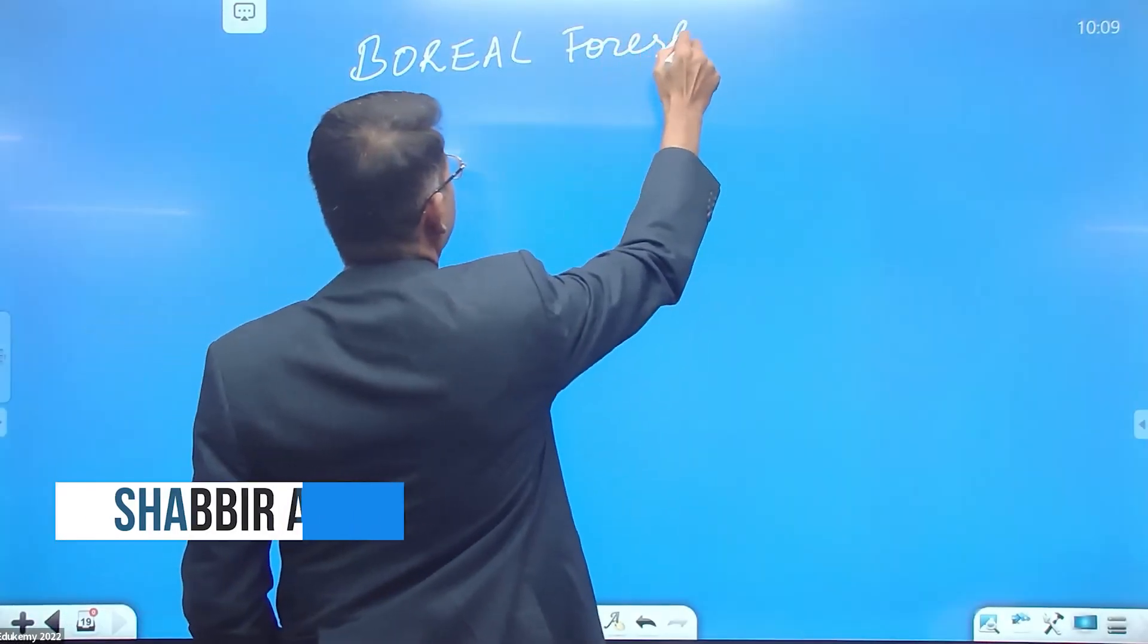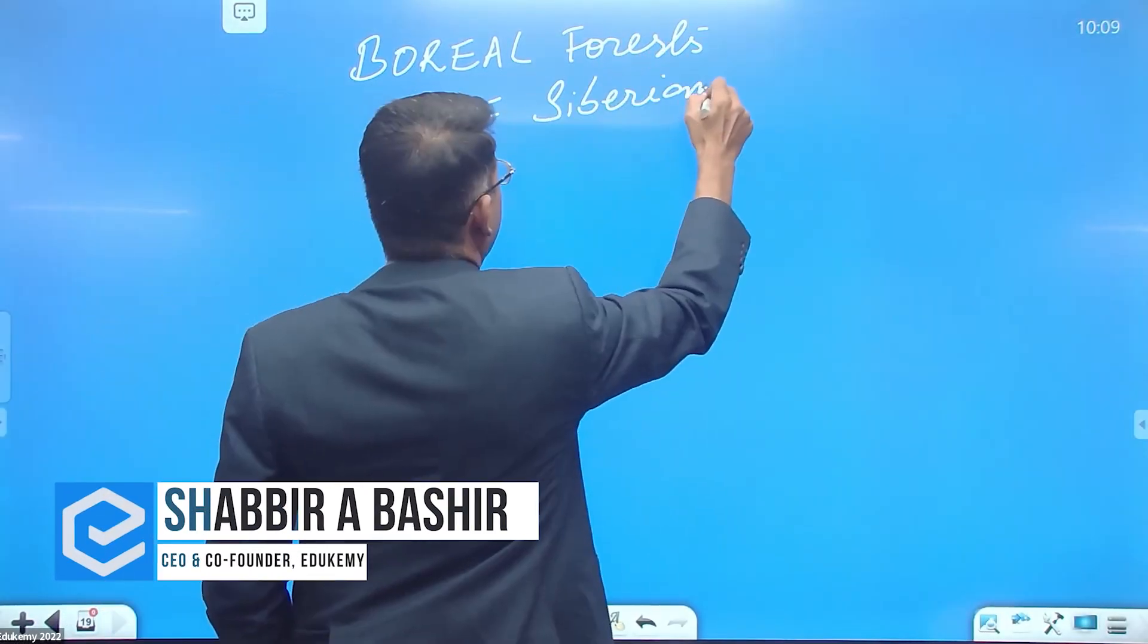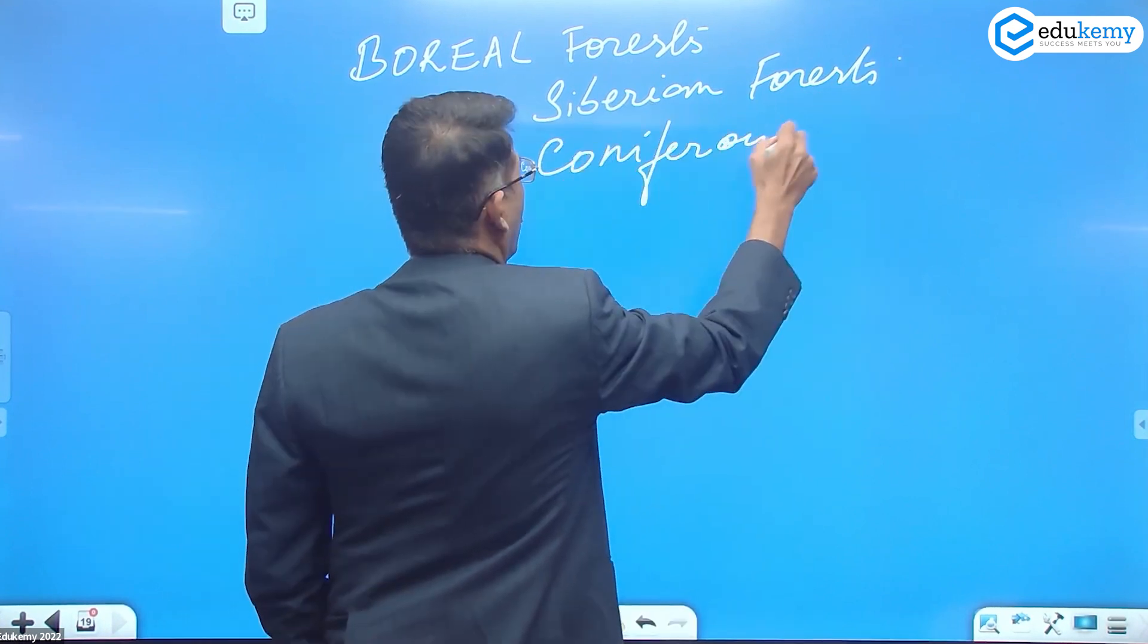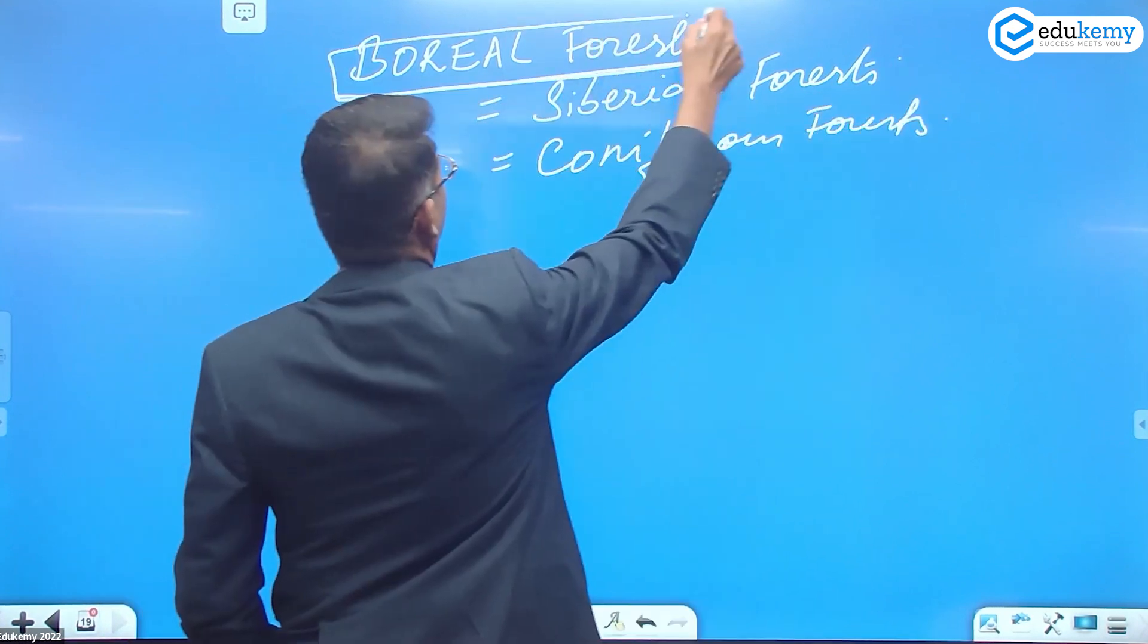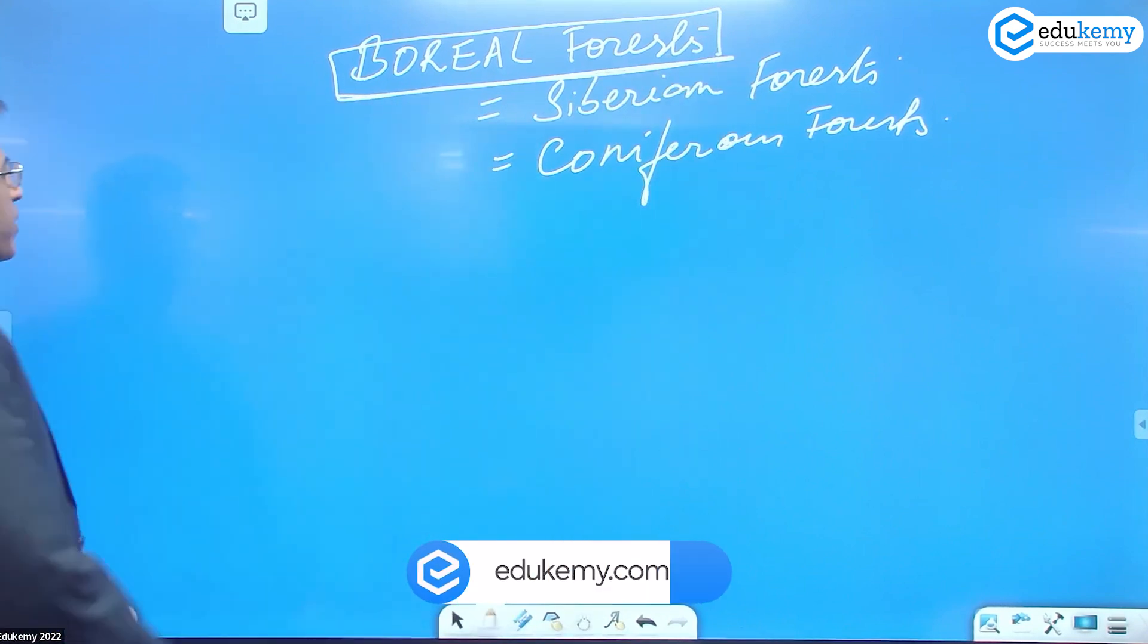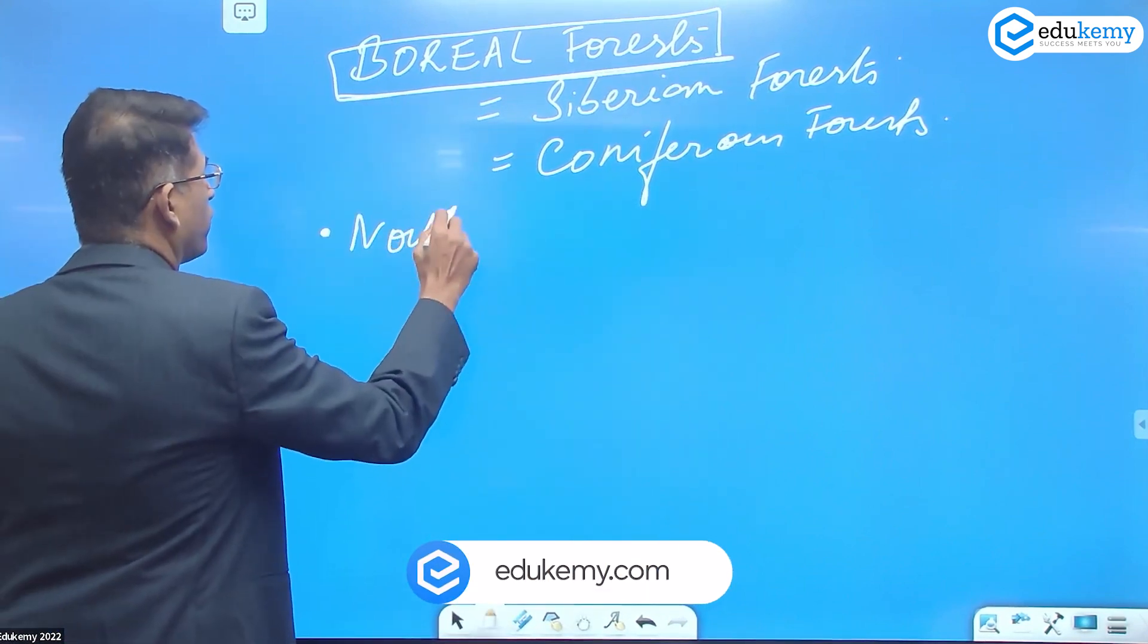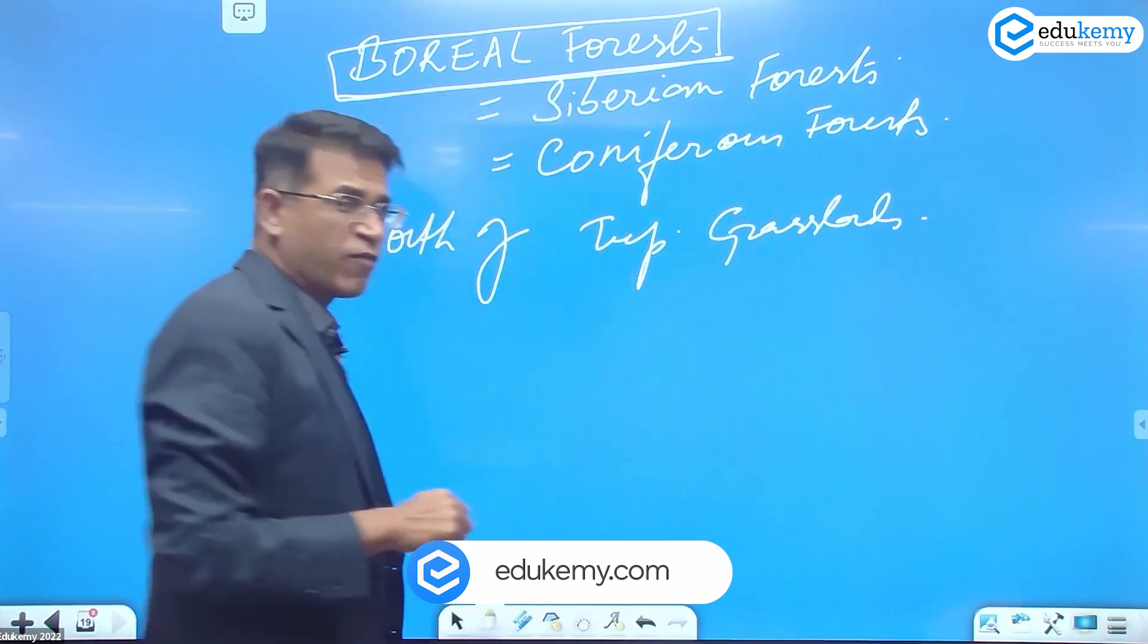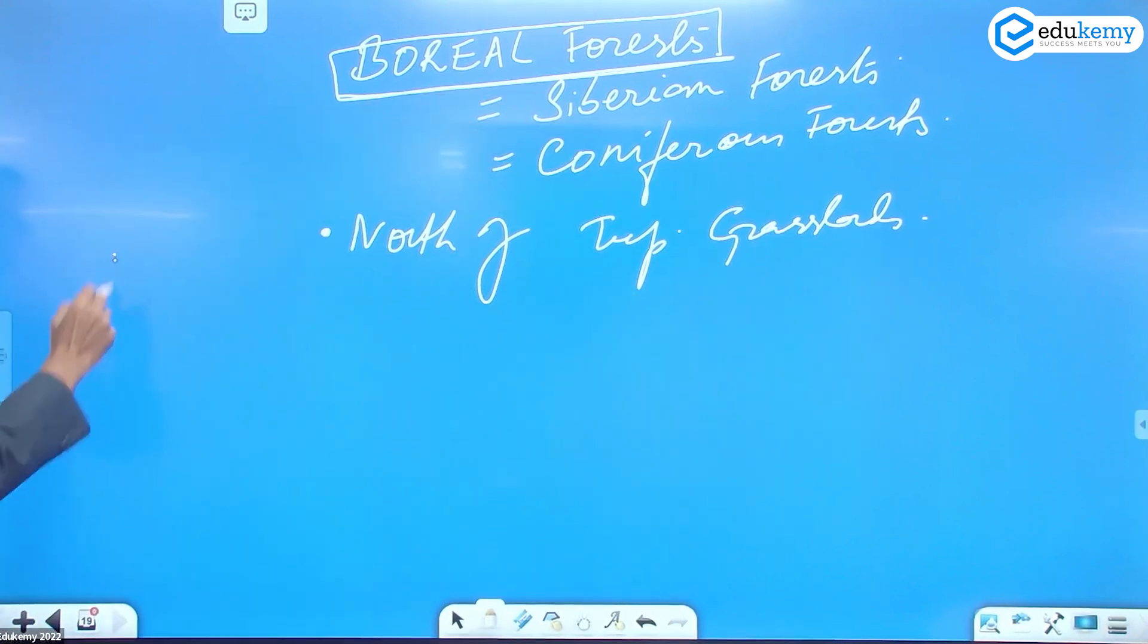The boreal forests are also called Siberian forests or coniferous forests. They are located north of the temperate grasslands. Same diagram I'll go back to.